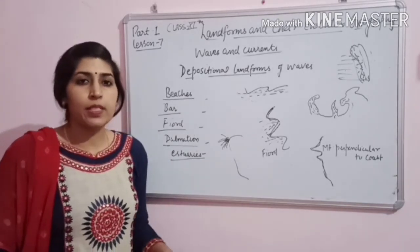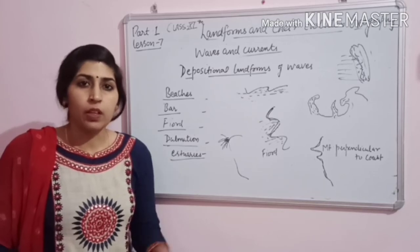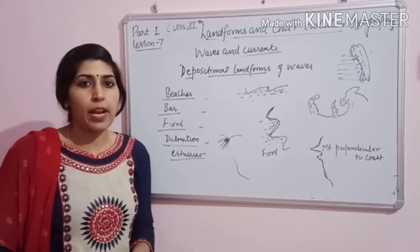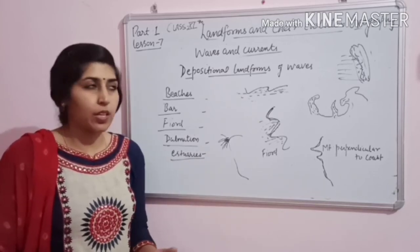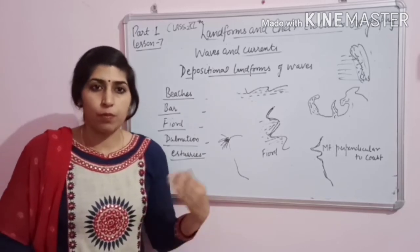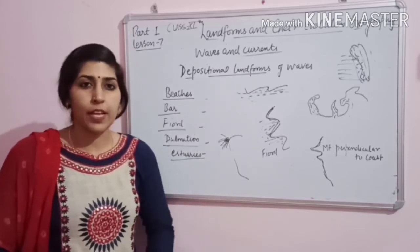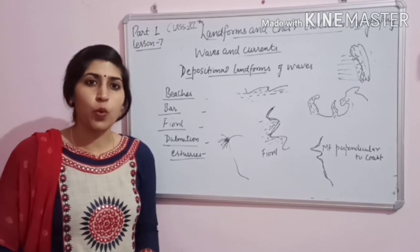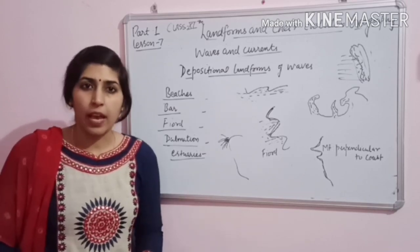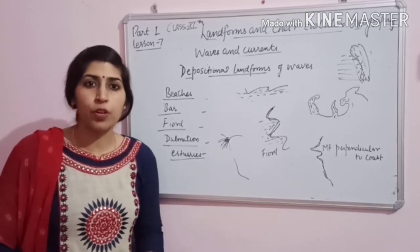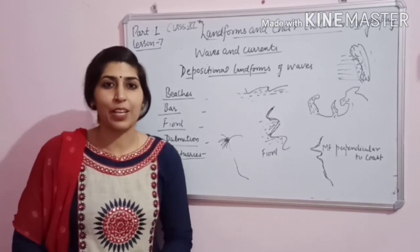So students, in this chapter we already read about the erosional and depositional activity of rivers and glaciers, and today we read the erosional and depositional activity of sea waves. I hope all of you understand. Read the chapter from your NCERT book, concentrate on your studies. Best of luck. Thank you.